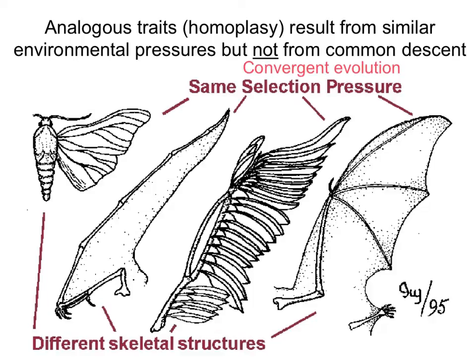They evolved wings because they have the same selection pressure — the environment is selecting them to evolve this particular trait. Traits that evolve because of the same selective pressure are said to evolve due to convergent evolution, which is the process driving these traits to look similar even if they do not share a common ancestor.